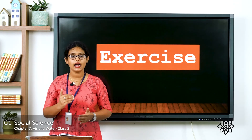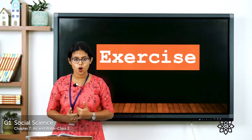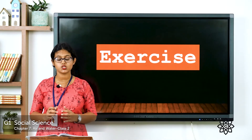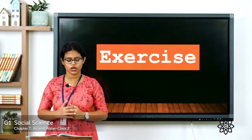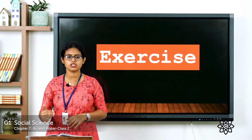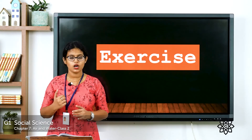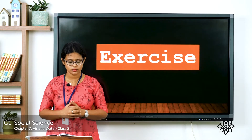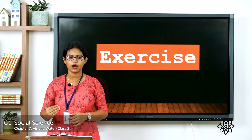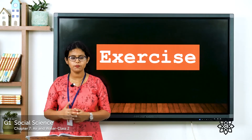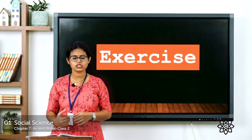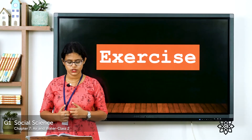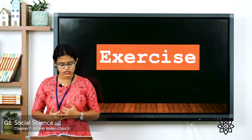The first question: Air is — option A: all around us, option B: only at home, option C: only in school. The second question: Moving air is called — option A: fan, option B: wind, option C: wave. The third question: Water is needed by — option A: toys, option B: plants, option C: pencils. The fourth question: We get water from — option A: rivers, option B: plants, option C: animals.